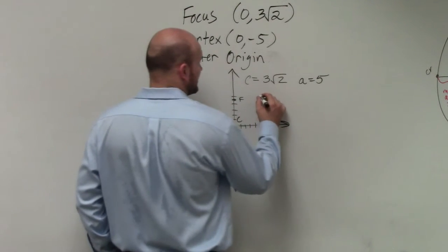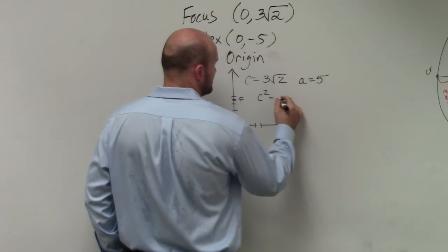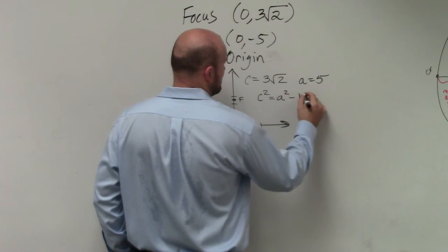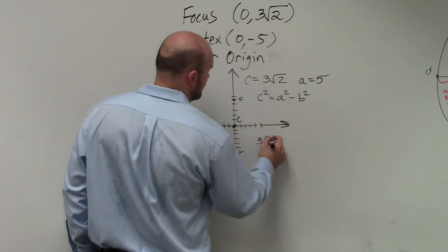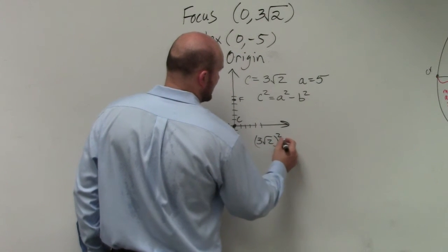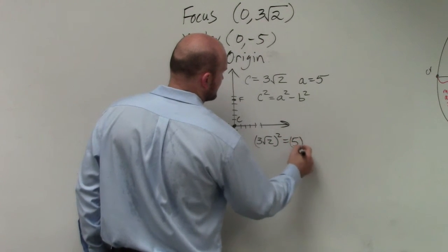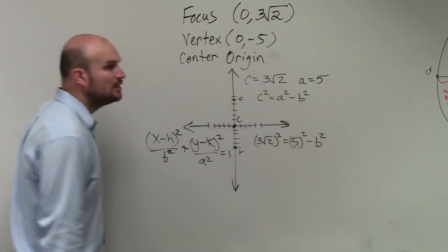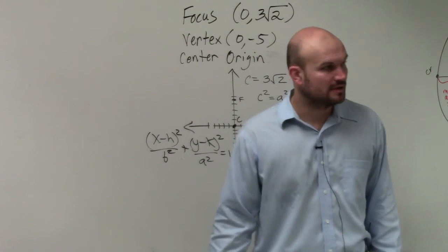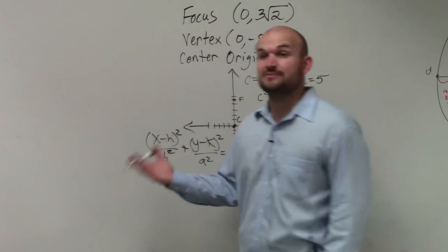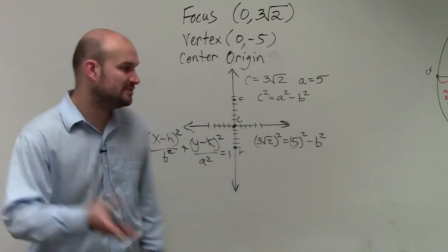Now, using my formula again, c squared equals a squared minus b squared. c squared is going to be 3 radical 2 squared equals 5 squared minus b squared. So what's 3 radical 2 times 3 radical 2? That's it squared, right? So 3 times 3 is 9. Square root of 2 times square root of 2 is 2. 9 times 2 is 18.